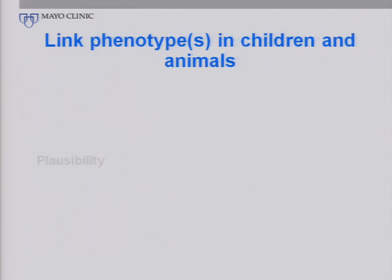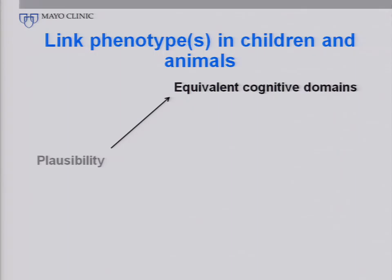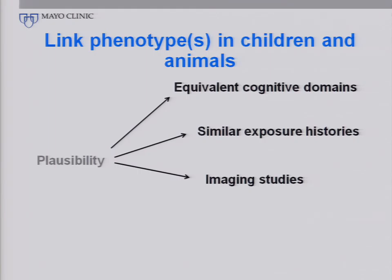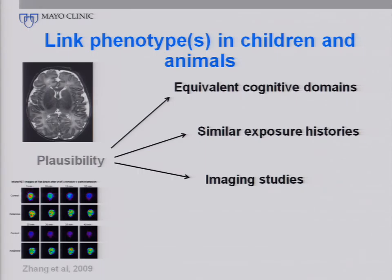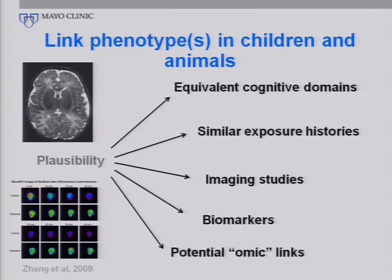The linking of phenotype again relates to plausibility in Sir Hill's formulation. It would be nice to see effects in similar cognitive domains in both the animal studies and the children's studies. It would be nice to see similar or at least analogous exposure histories in animals and children. Imaging studies have been suggested as one potential surrogate outcome to link animal and human studies. We're already starting to see, for example, a study by Zhang using PET imaging to try to identify a pattern of injury that could also be done in humans. A variety of biomarkers may also be a possibility, including omics of various types, to link what is seen in animals with children.